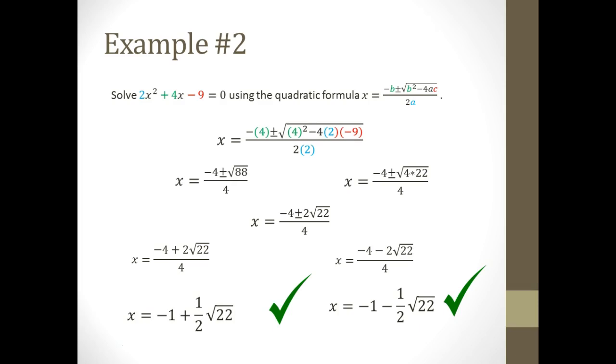Now, in both cases, example 1 and example 2, if I store the value of negative 1 plus 1 half times the square root of 22 into x, and then check it using my calculator, I'm going to get 0. Same thing for this. This is how you can check. If you're unsure what I'm talking about, ask me in class about that specific thing.